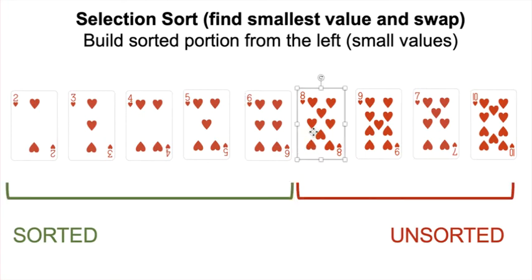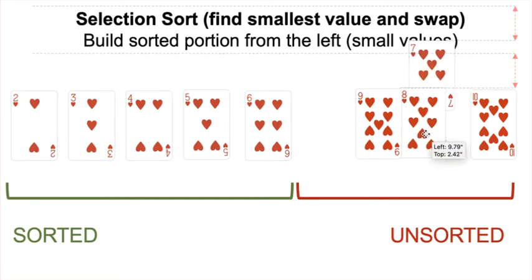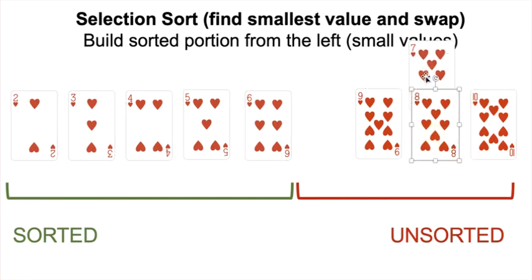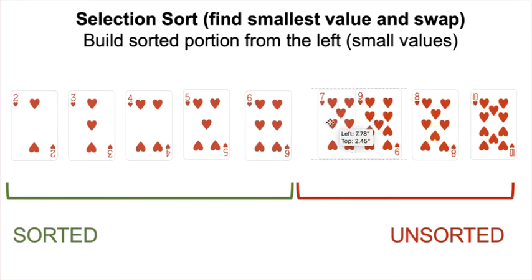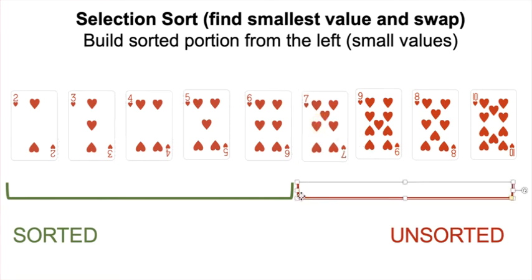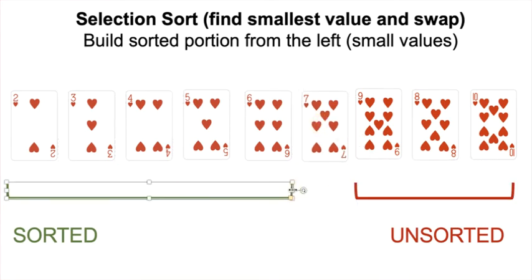8 is our smallest element. 9 smaller than 8? No. 7 smaller than 8? Yes. 10 smaller than 7? No. We swap the 8 and the 7. Unsorted shrinks by 1, sorted grows by 1.